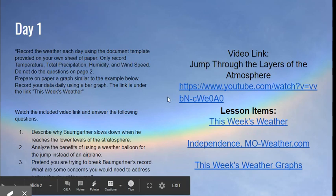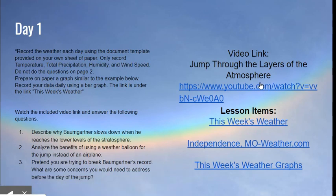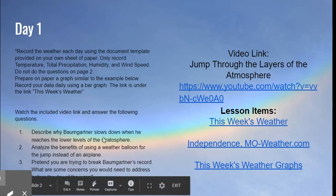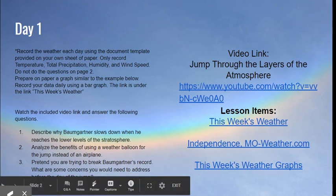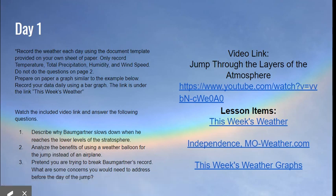Once you have finished that, we would like you to click on the link for the video 'Jump Through the Layers of the Atmosphere' and then on your own sheet of paper answer the following questions. Number one, describe why Baumgartner slows down when he reaches the lower levels of the stratosphere. Number two, analyze the benefits of using a weather balloon for the jump instead of an airplane. And number three, pretend you are trying to break Baumgartner's record — what are some concerns you would need to address before the day of the jump?